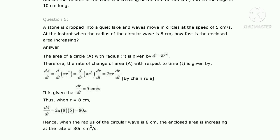The speed is given as 5 cm/s, so dr/dt = 5 cm/s. The radius is given as 8 cm. Substituting these values: dA/dt = 2π × 8 × 5 = 80π. Hence, when the radius of the circular wave is 8 cm, the enclosed area is increasing at the rate of 80π cm² per second.